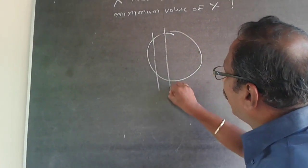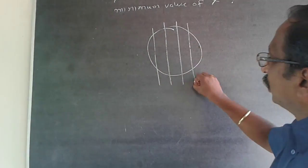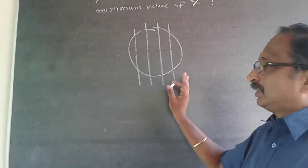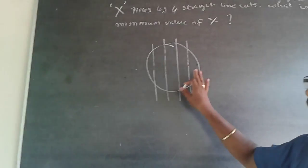1, 2, from one end to the other end it has to go, 3 and 4. So this is the minimum number of pieces which will be 5.